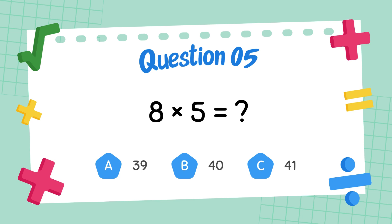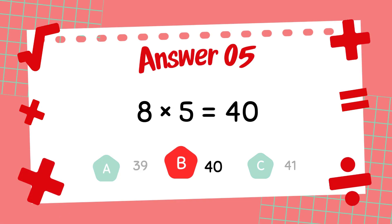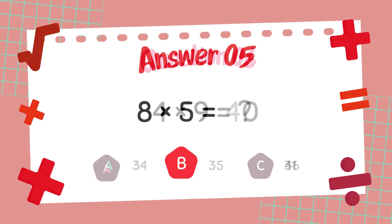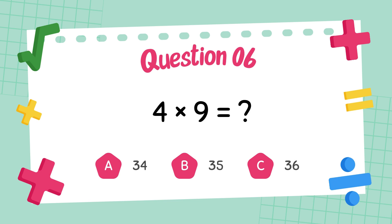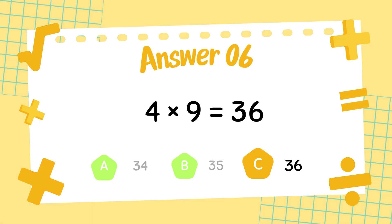What is 8 times 5? The answer is 40. What is 4 times 9? The answer is 36.